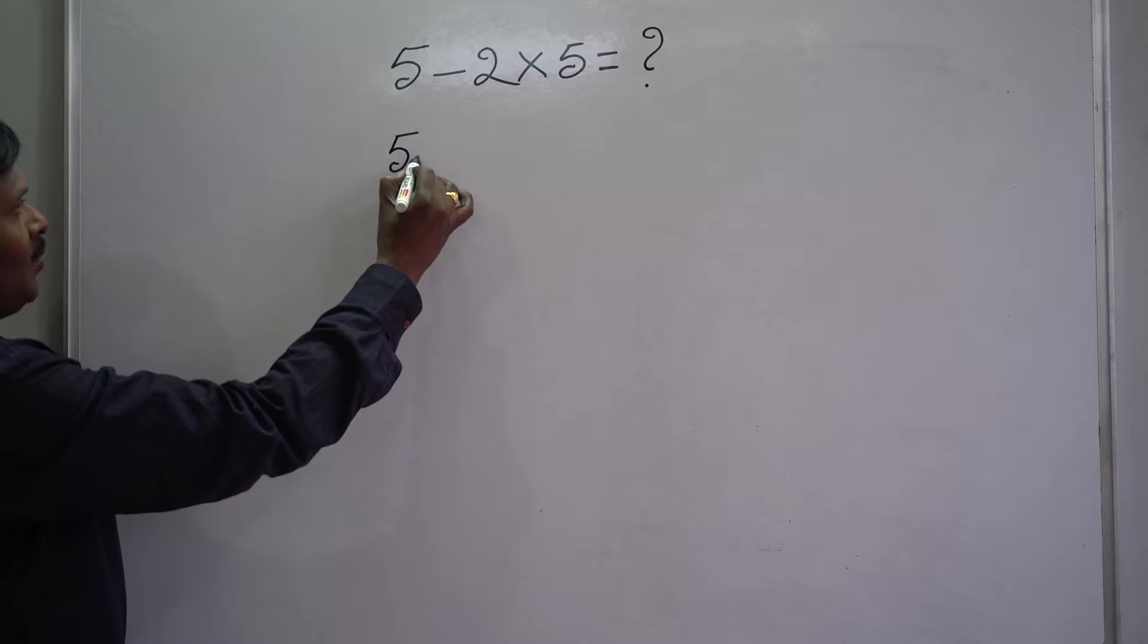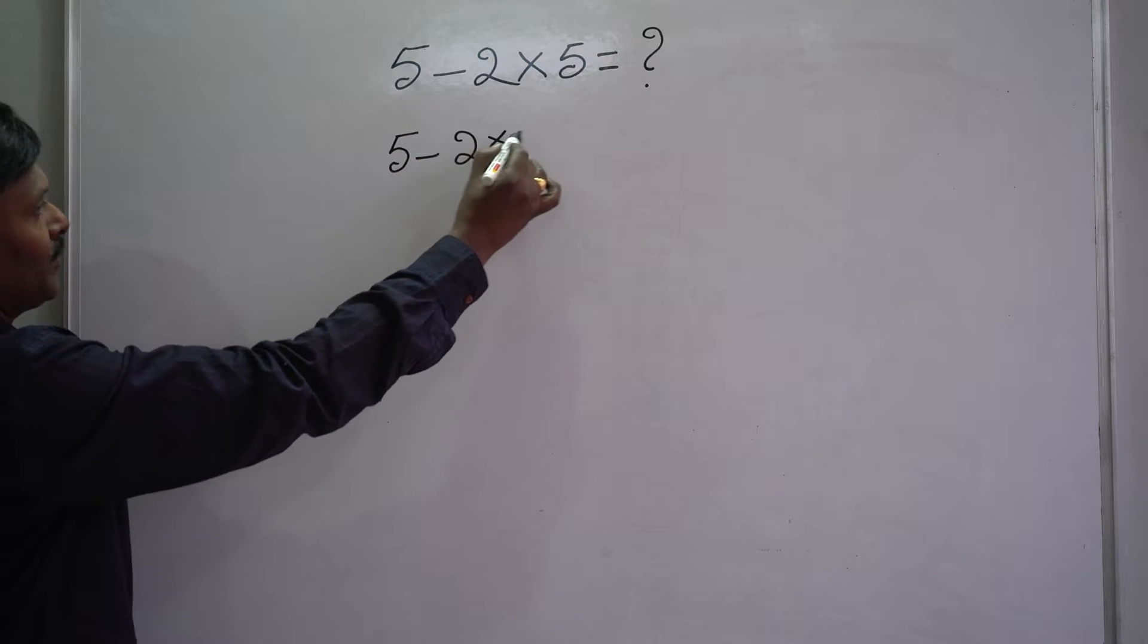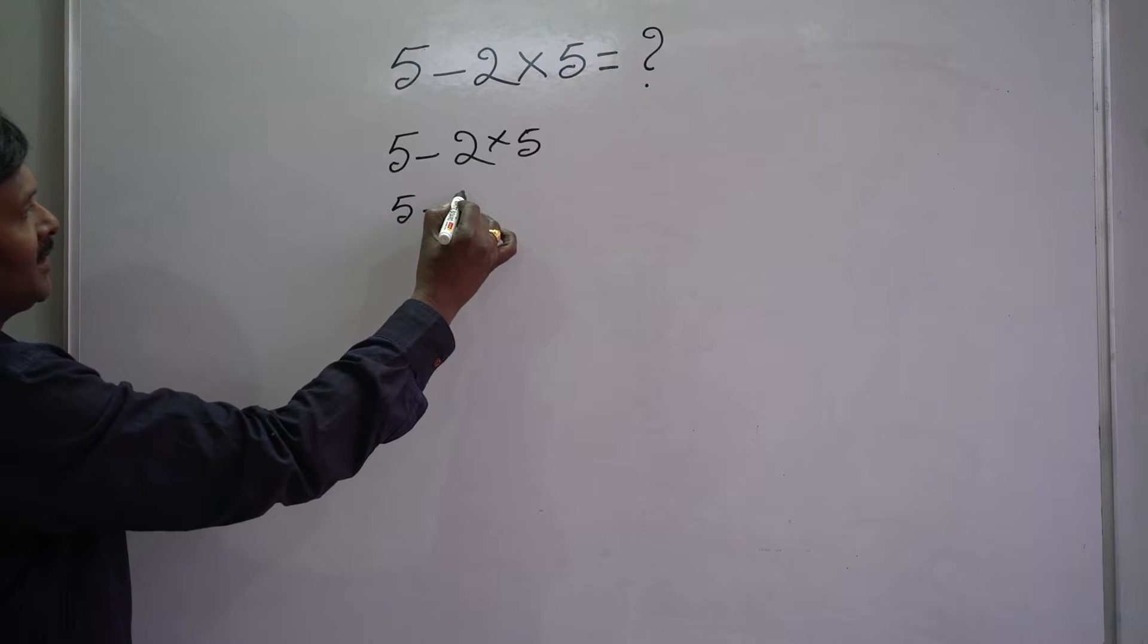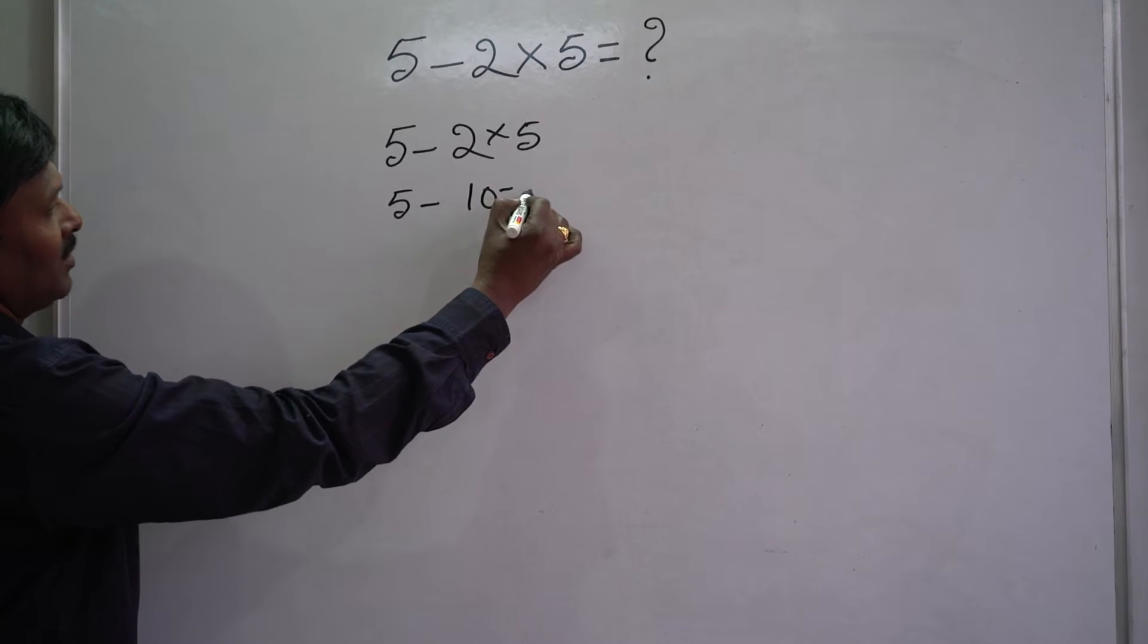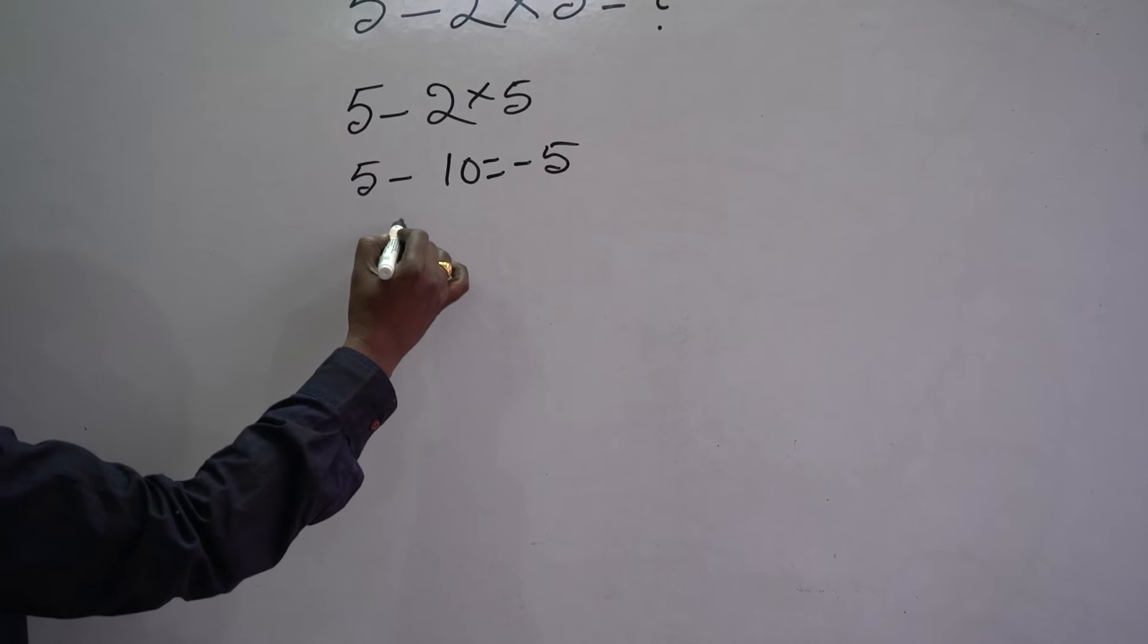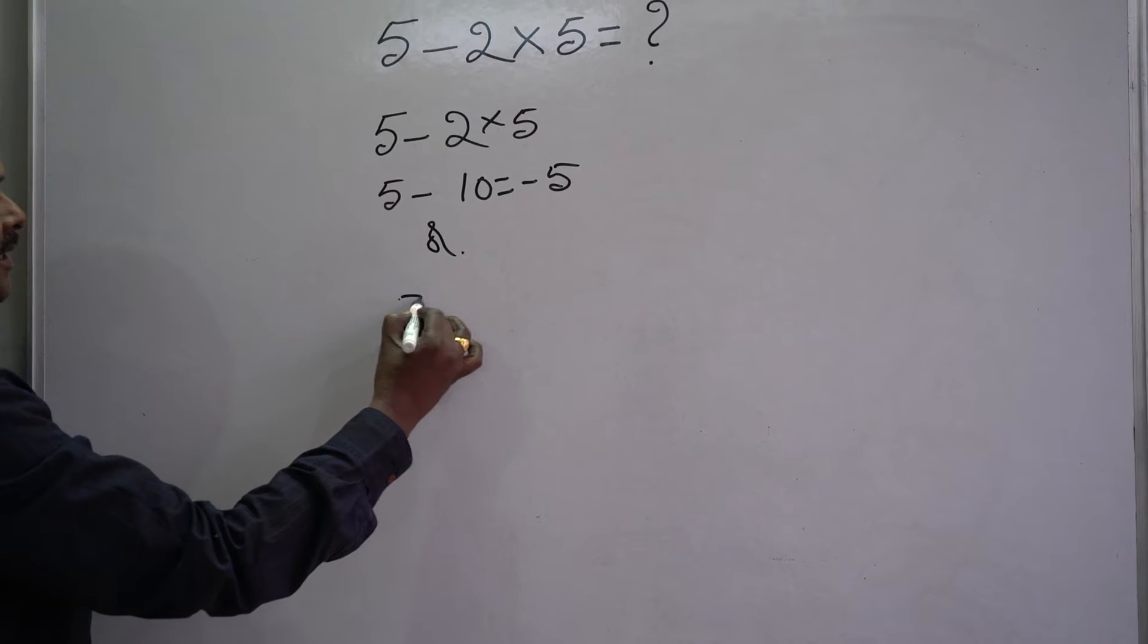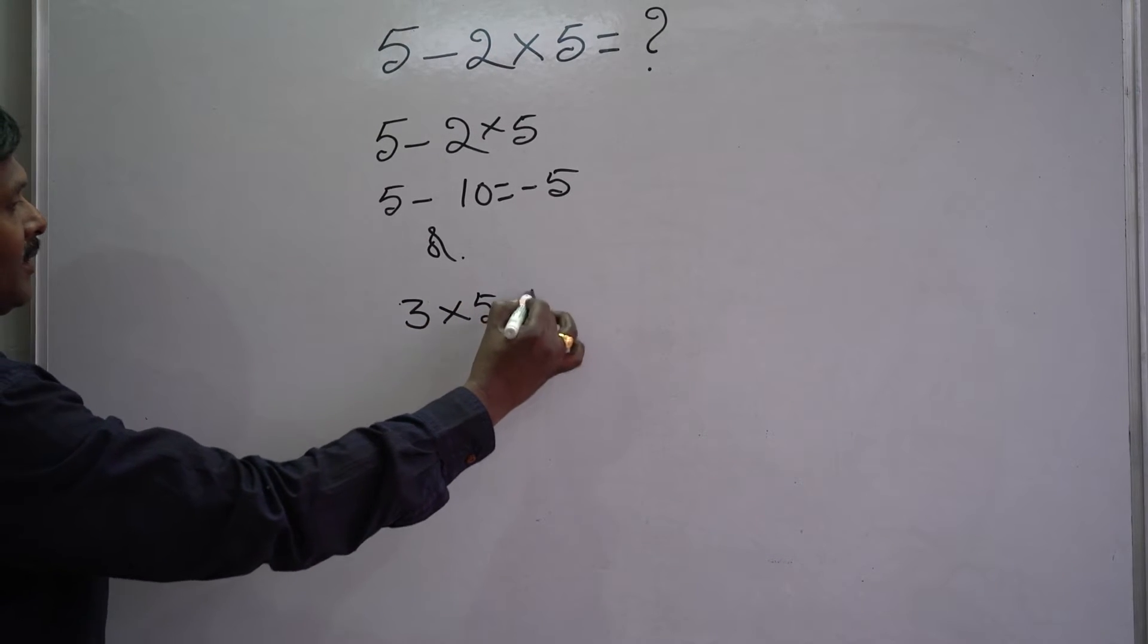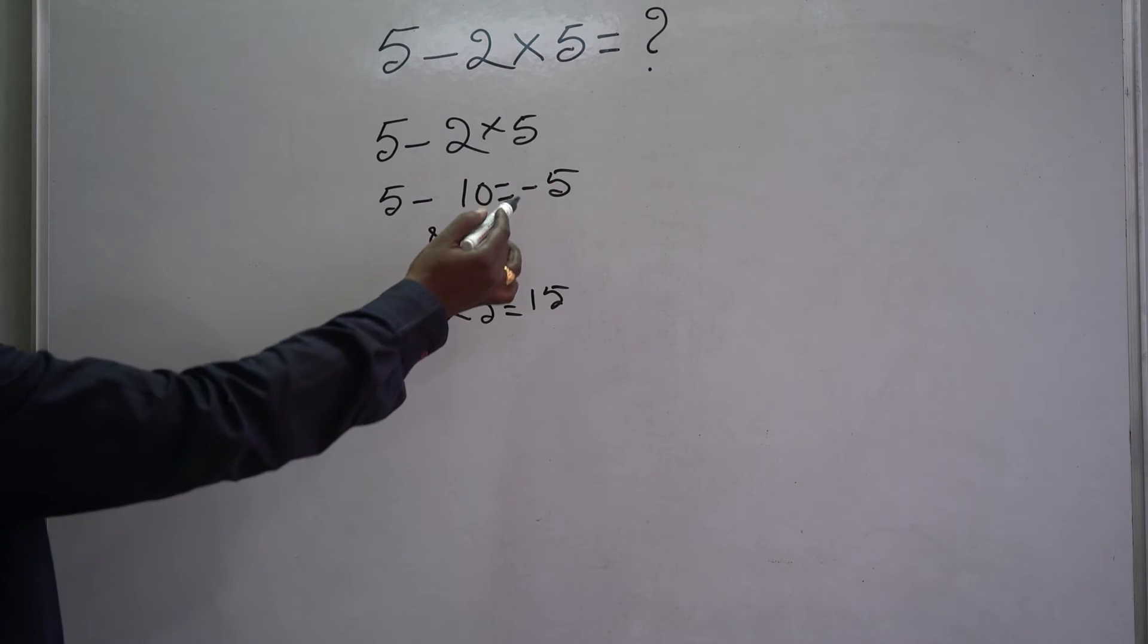5 minus 2 into 5. 5 minus 10 is equal to minus 5. Or, 5 minus 2, how much? 3. 3 into 5 is 15. So can you tell me which one is correct?